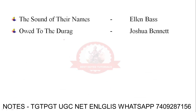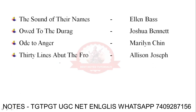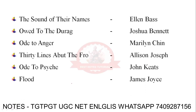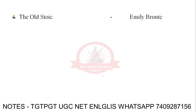More important odes: Ode to Angle Melancholy, 30 Lines Above the Floor by Alison Joseph; Ode to Psyche by John Keats; Flood by James Joyce; A Birdsong by Christina Rossetti; The Old Stoic. Memorizing all these odes in English literature is a tough job.